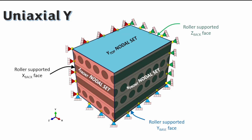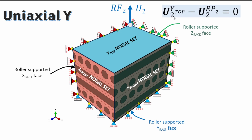For the uniaxial Y direction, a similar approach applies. We transfer loading to reference point 2, applying a Y-axis tensile displacement that pushes the system upward. A canonical constraint equation is also needed, this time linking the Y top face to reference point 2 in the 2-direction, so that the Y top face deforms equivalently to the displacement of reference point 2.